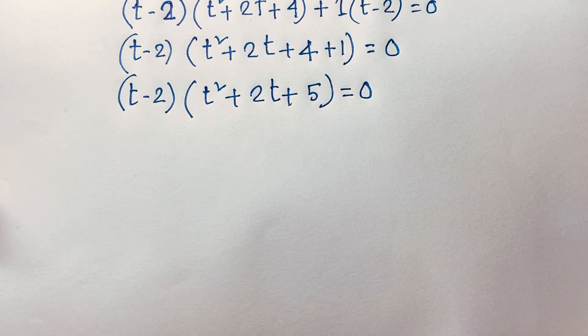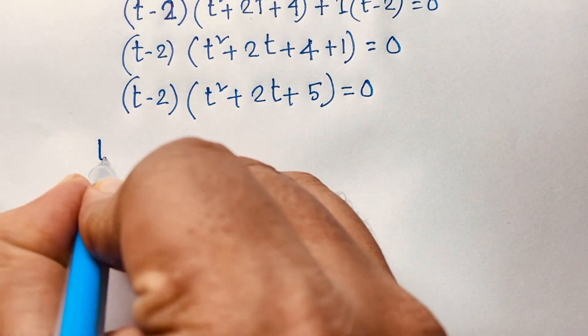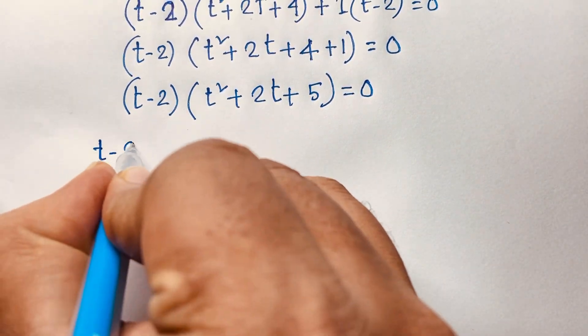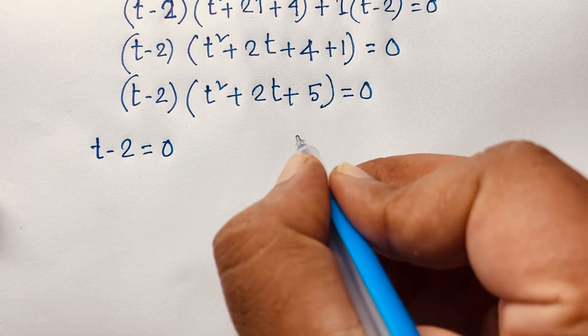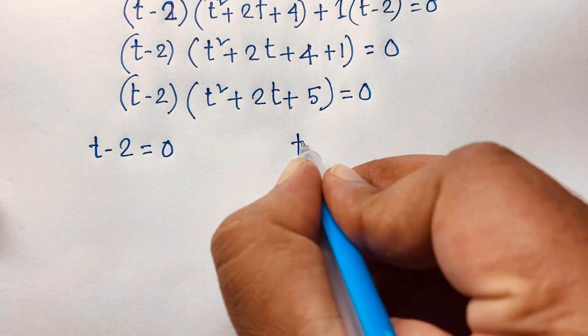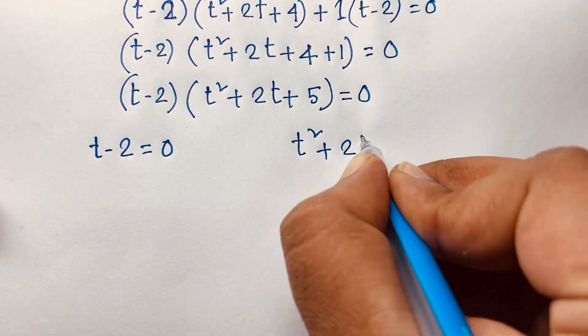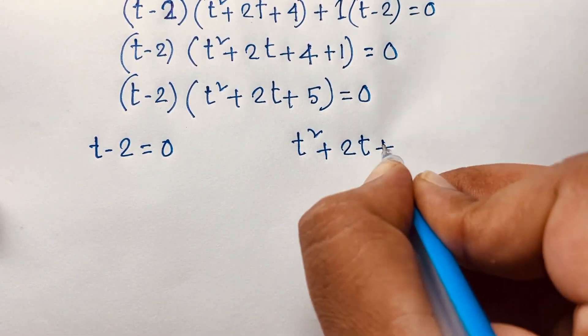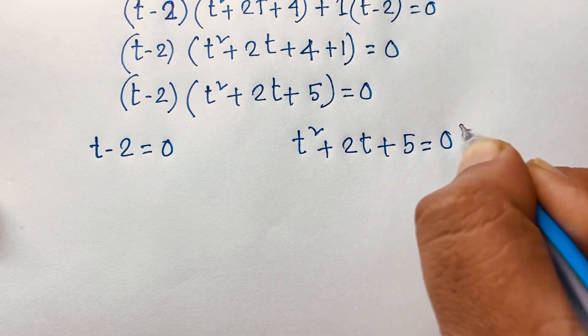We have two cases. First case: t minus 2 equals 0. Second case: t squared plus 2t plus 5 equals 0.